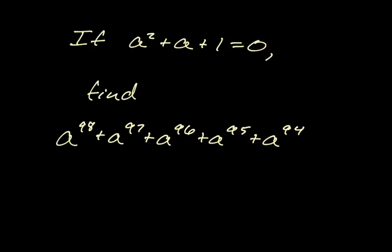In this video we're going to do this quick little problem that I saw posted online somewhere and I really liked. It says if a squared plus a plus one equals zero, we want to find a to the 98th plus a to the 97th plus a to the 96th plus a to the 95th plus a to the 94th.